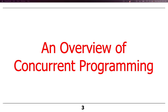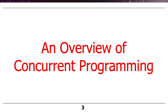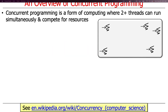We'll also see that some of the downsides of sequential programming are overcome through the use of concurrent programming. A concurrent program is a form of computing where two or more threads run simultaneously and compete for resources — the key focus being compete for resources.